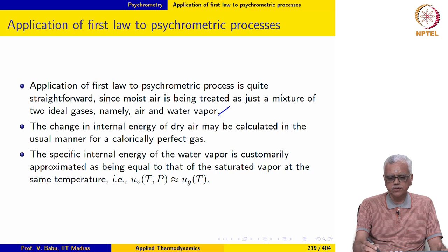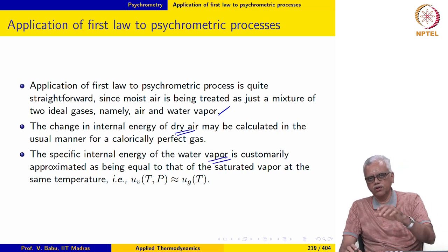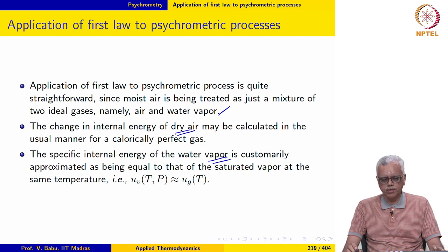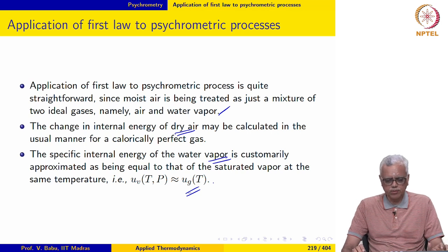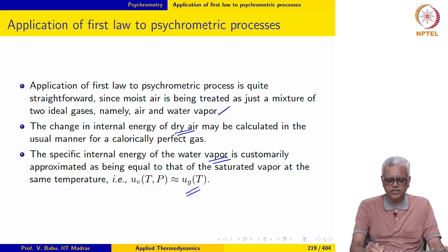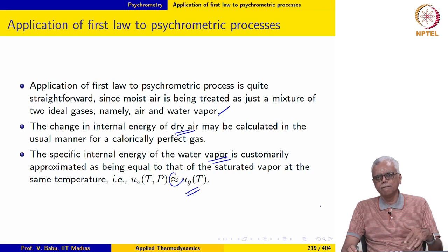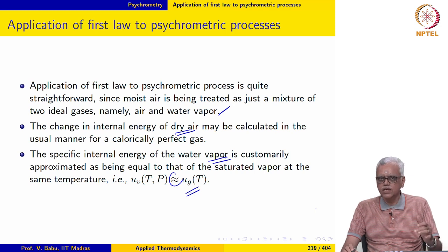For non-flow processes, the change in internal energy of dry air is calculated assuming dry air is a calorically perfect gas — we assume Cv to be constant. The specific internal energy of water vapour is approximated as the specific internal energy of saturated vapour at the same temperature: uv(T, P) is simply taken as ug(T), even if we know the partial pressure.